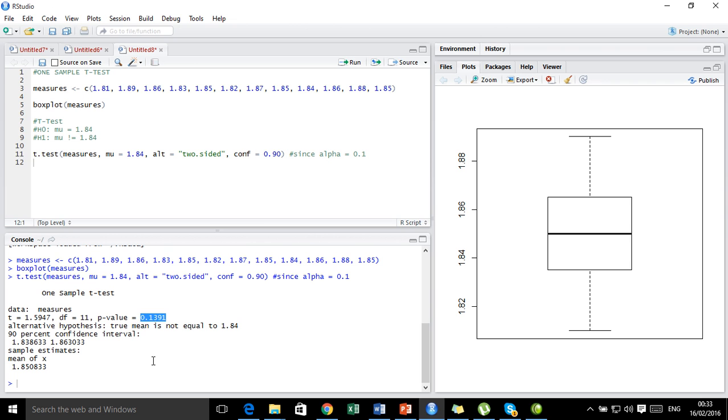Now let us concentrate on this p-value. The p-value is 0.1391, which is greater than the chosen level of significance alpha. So based on this we can conclude that the data provides convincing evidence that the null hypothesis is true. And so we will accept our null hypothesis and reject the alternate claim.